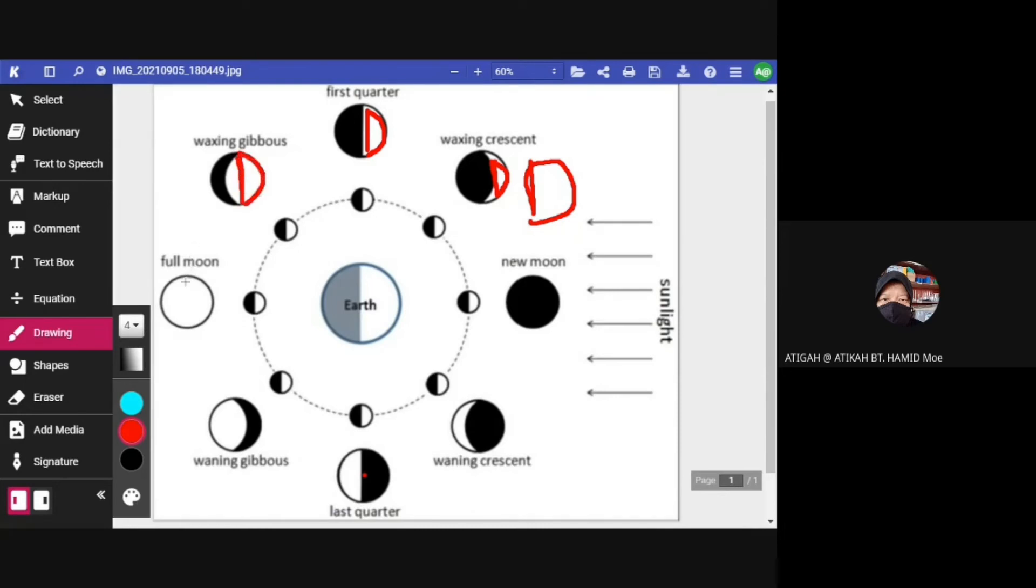Then, full moon. Full moon is a circle, just like an O. And then, gibbous moon again. This gibbous moon is just like a C, alphabet C. Continue with half moon. C. The shape is like C. And this crescent also, C.